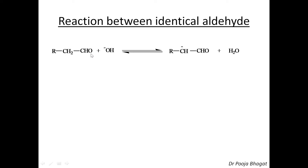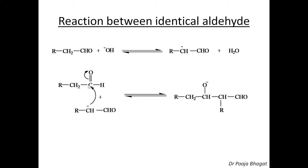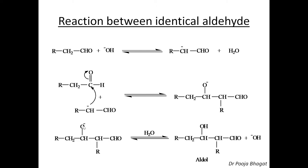This is the alpha carbon. The base will abstract the hydrogen of this alpha carbon to give the carbanion. This ion then attacks the carbonyl of another aldehyde molecule, and the double bond shifts towards the oxygen. So the negative charge attacks on the carbon and the double bond shifts towards the oxygen, giving RCH₂CH with single bond O⁻, bonded to CH with CHO and R attached. Then O⁻ takes a proton from the water molecule and this gets converted into OH, giving the aldol product.